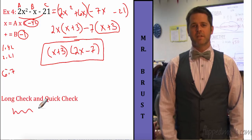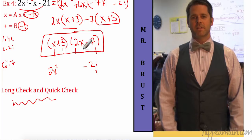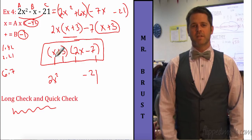Now I want to talk about a long check and a quick check. The long check: multiply out both binomials by double distributing. The quick check — which I highly recommend — covers most mistakes: first times first, 1 times 2x² gives 2x squared, which is what we want; last times last gives negative 21, which is what we want. That's a strong indicator we did it right, though not 100% guaranteed.